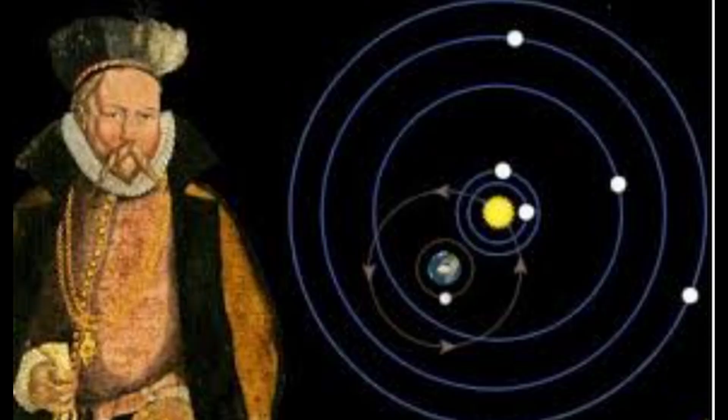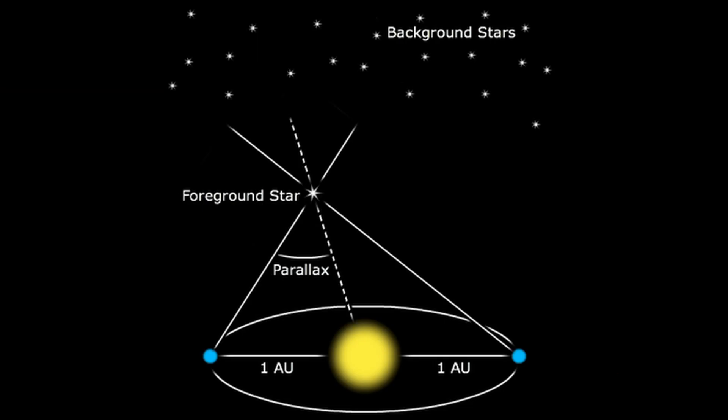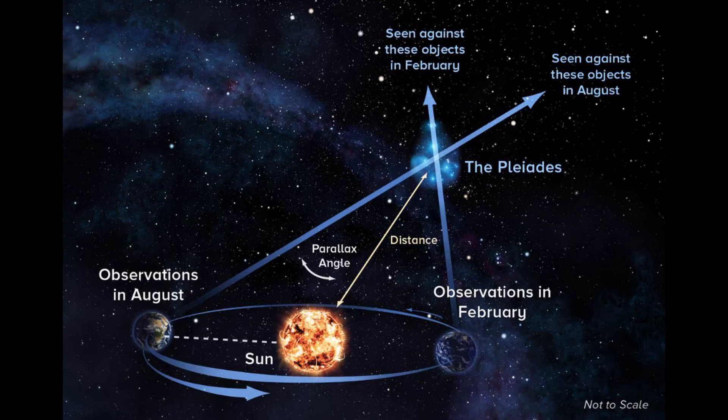The main prediction difference between Tychoism and heliocentrism was in star parallax. Parallax is the apparent shift in the position of an object when viewed from two different perspectives. This phenomenon is widely used in astronomy, photography, and everyday life to determine distances.